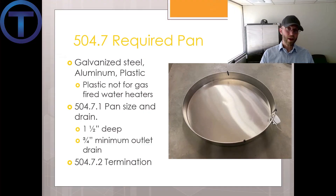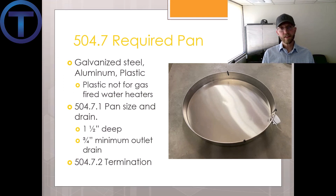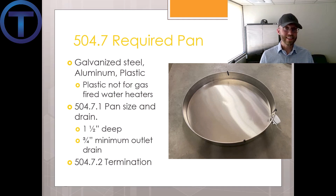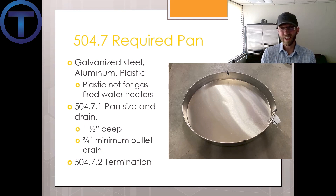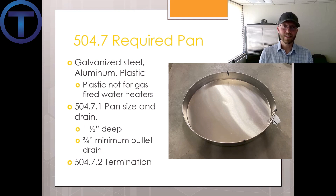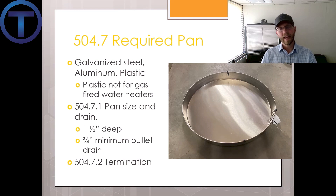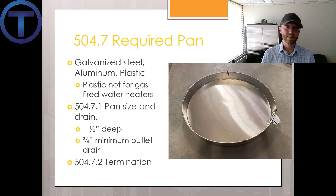504.7 tells us about when we need a water heater pan. We need a pan when a leak from the water heater would cause damage to the structure. In a wood-framed building with wood subfloors and joists, if water gets out it will rot the subfloor, damage the joists, and affect the structure holding the tank — the water heater could fall through the floor.